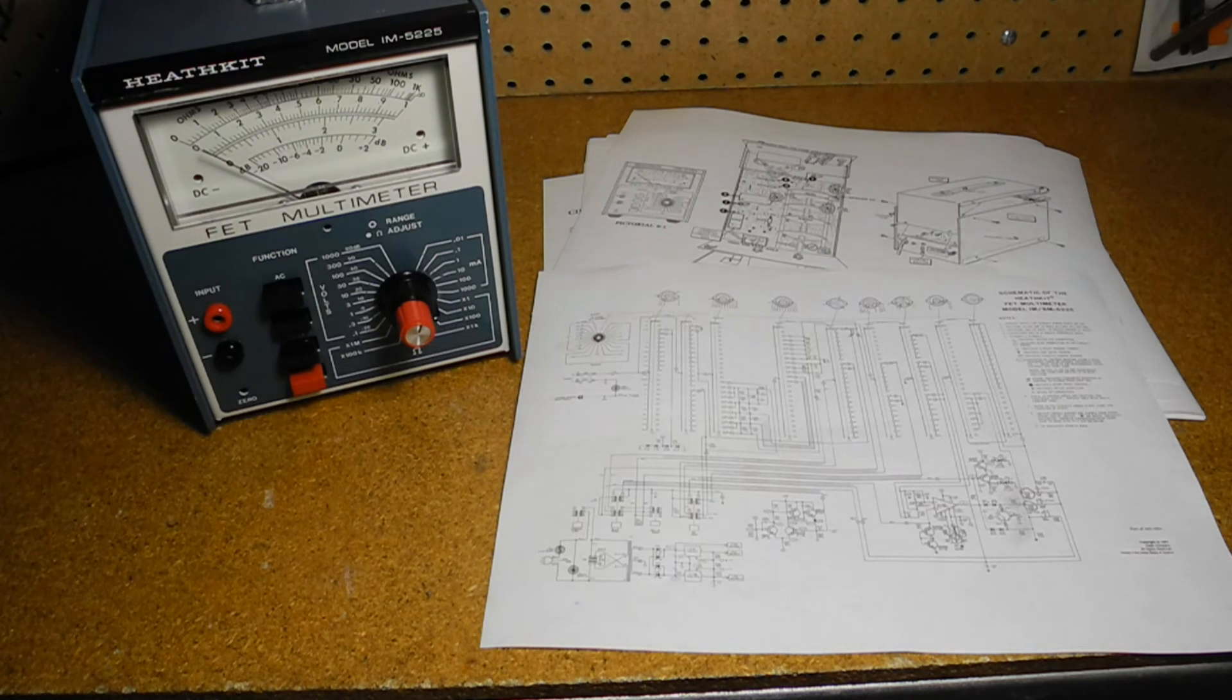R146, a 100 ohm trim pot, measured high at about 168 ohms so I replaced it, but it made no difference. Most voltages appeared to be correct. I swapped the op amp with another one and that did not help. Then I noticed that the resistance of the meter was much higher than normal.